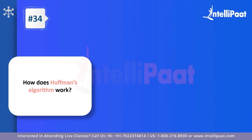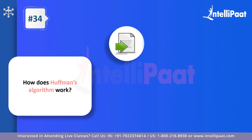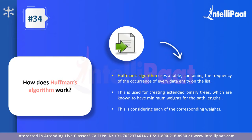Question thirty-four: how does Huffman's algorithm work? Huffman's algorithm requires a table that stores the frequency of occurrence of elements. If you have ten elements each occurring many times, the table states how often each element appears. This is used when constructing extended binary trees with minimum weights, helping keep track of element frequencies. Huffman's algorithm is the governing entity that represents each data element's presence in a structured format. Using a paper example during the interview adds significant value.